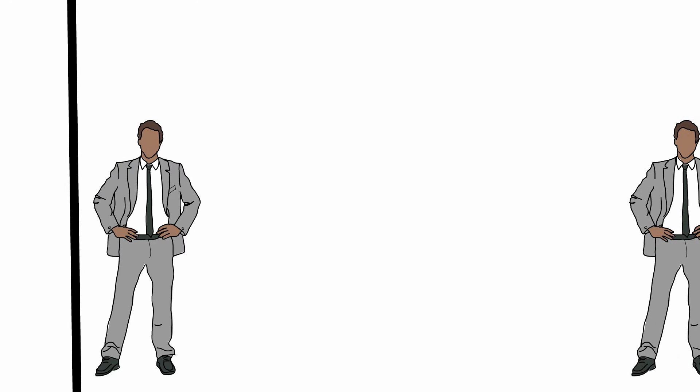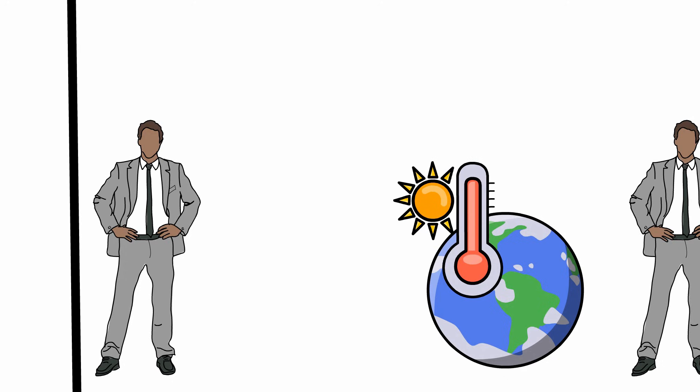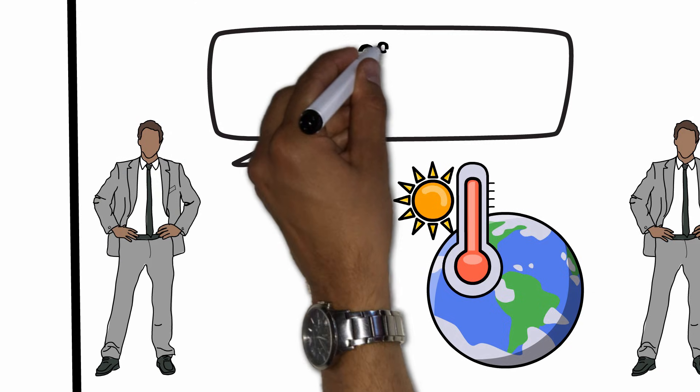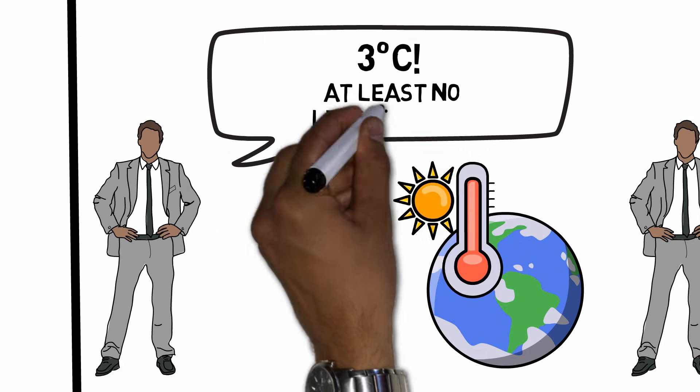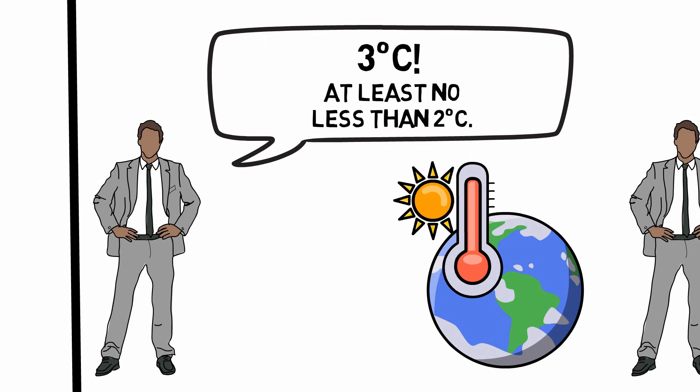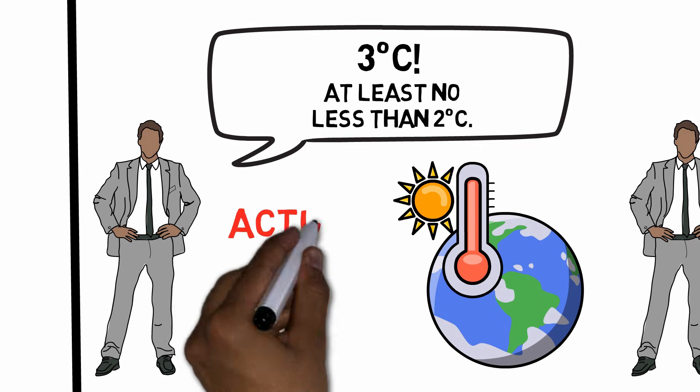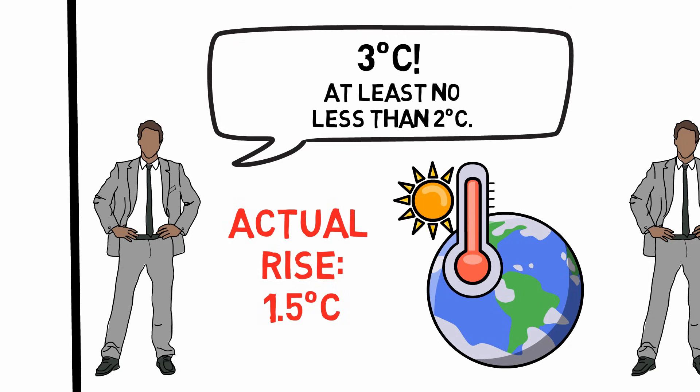In 1990, the IPCC, the International Panel on Climate Change, forecasted that the rise of temperature would most likely be at a rate of 3 degrees Celsius per century, but definitely no less than 2 degrees per century going forward. As of 2011, when Nate Silver released the signal and the noise, the increase has been just 1.5 degrees Celsius.